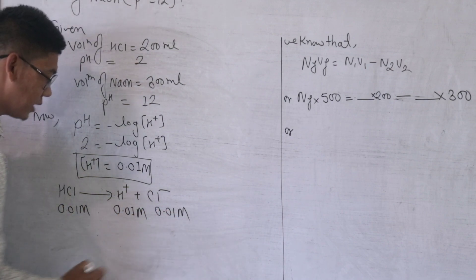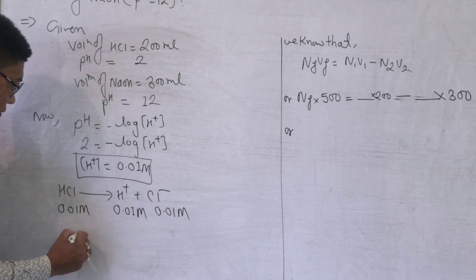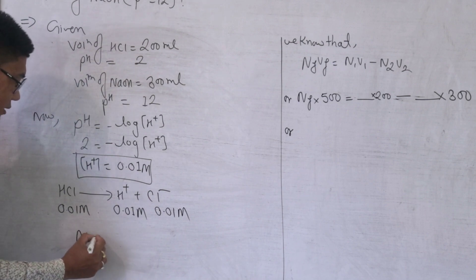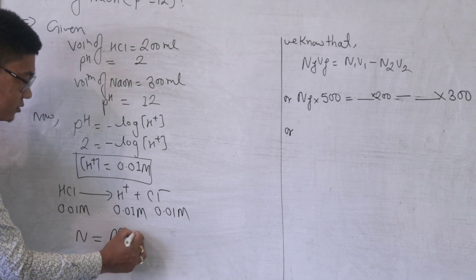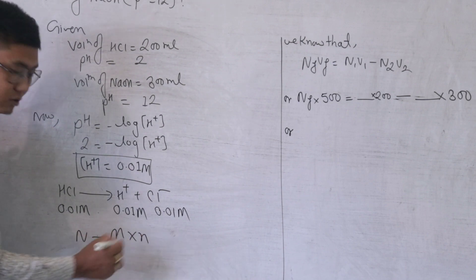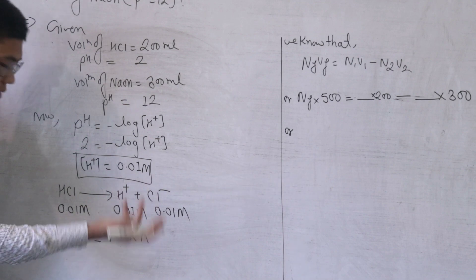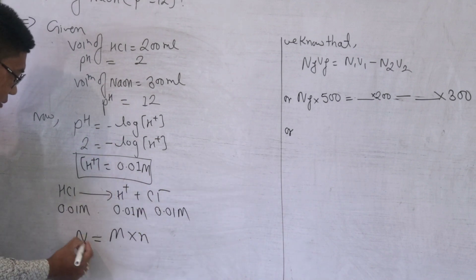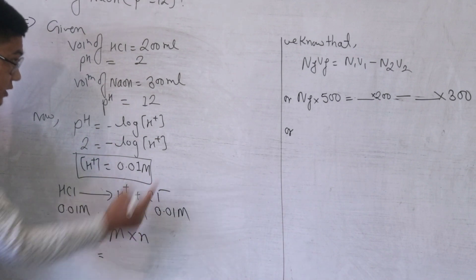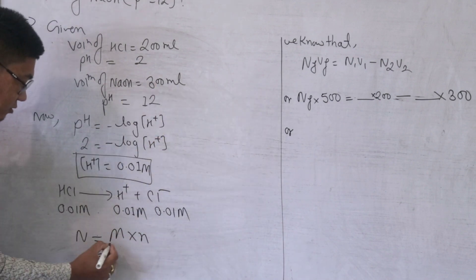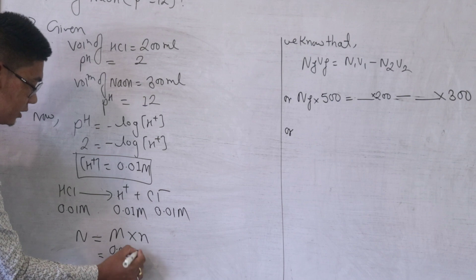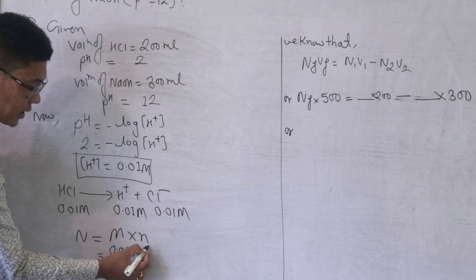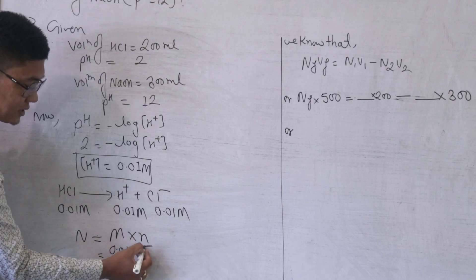We have a normality of 0.01. Normality is equal to molarity — this is a voluntary concept. Normality equals molarity, so molarity is 0.01. For a monoprotic acid, basicity or acidity factor is 1.